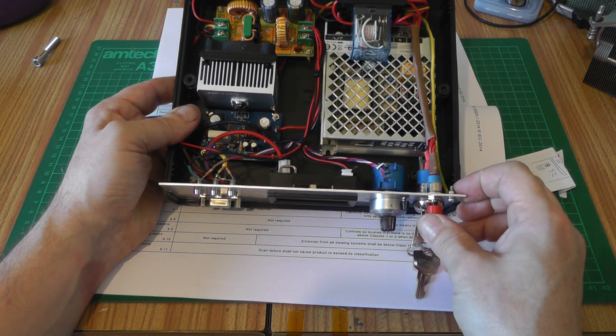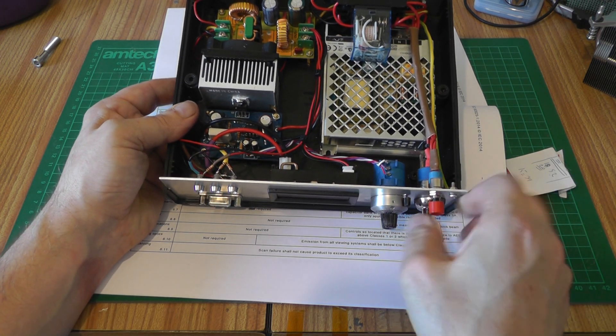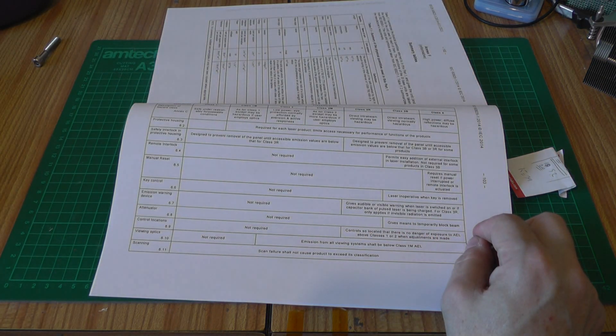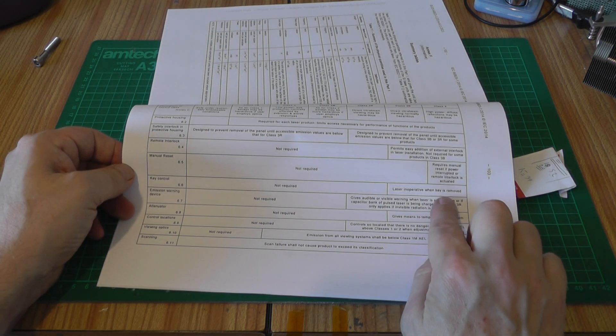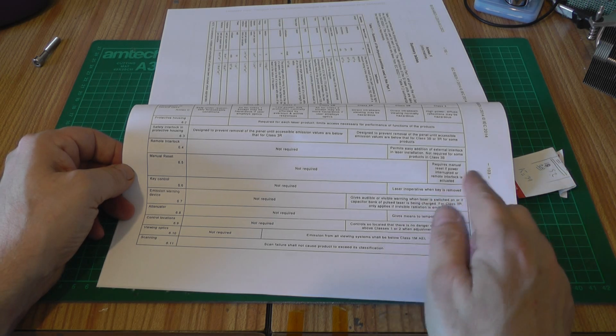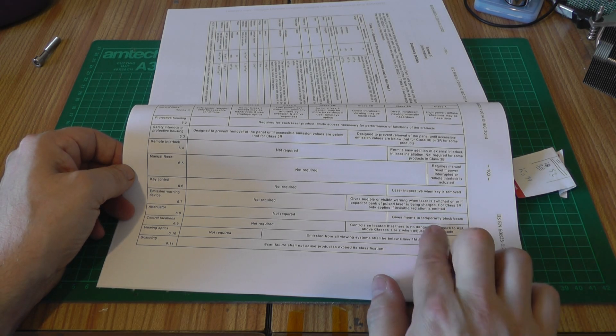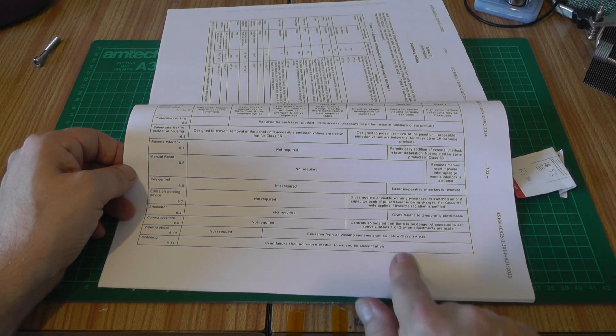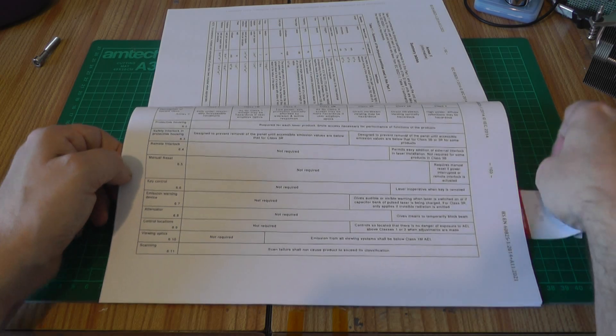The laser is inoperative when the key is removed, and it's captive as well. It gives a visible warning, gives a means to temporarily block the beam. This is like part of the installation itself, so we'll deal with that later on.